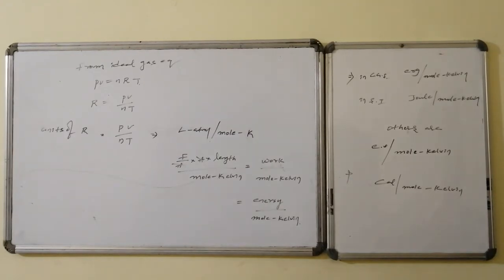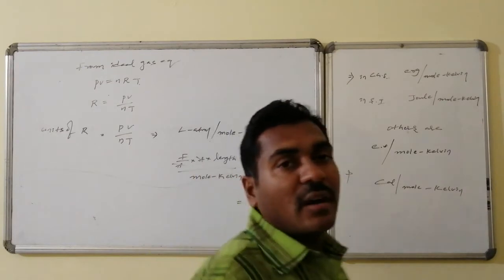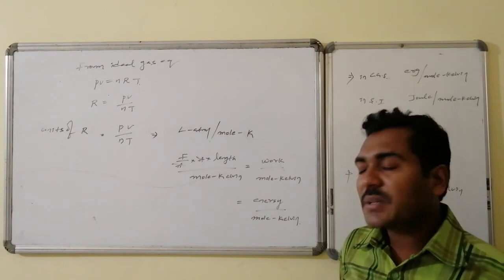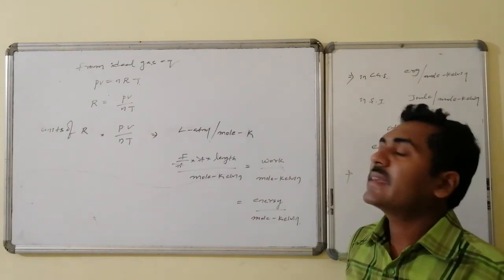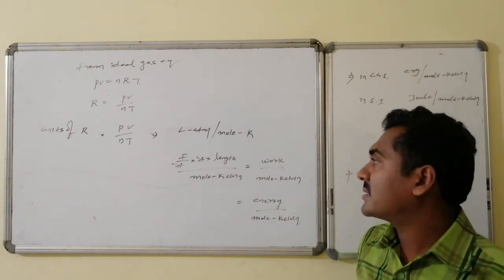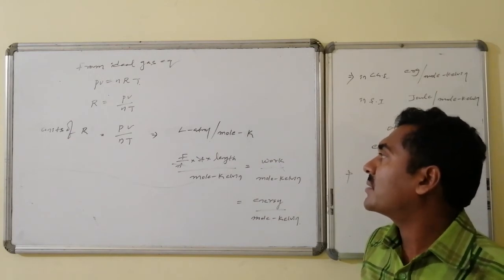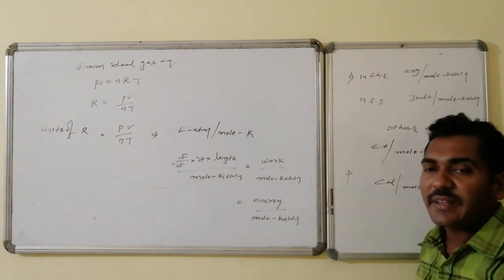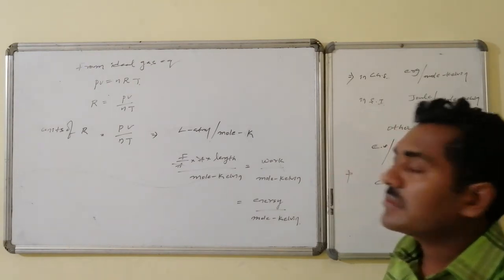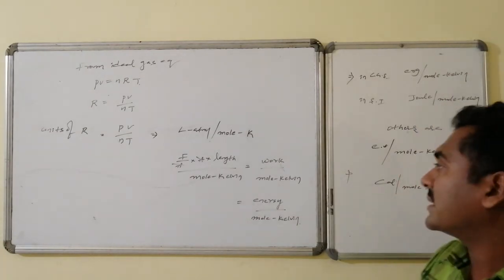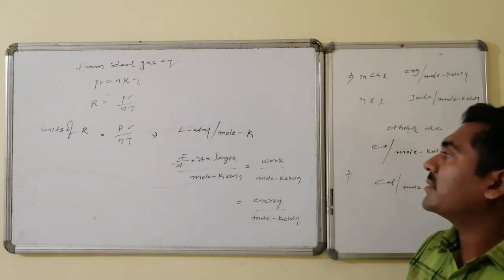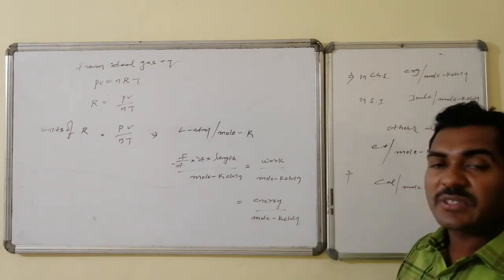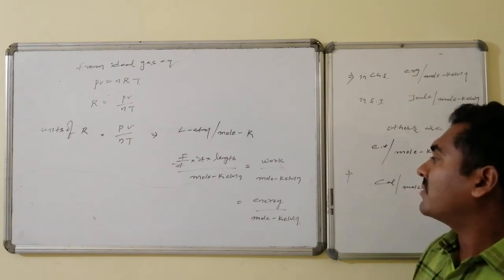From the ideal gas equation PV = nRT, R is the universal gas constant equal to PV/nT. The units of R are determined from PV/nT: pressure is force per unit area, and volume is area times one dimension of length, so area cancels, leaving force times displacement, which is work. Work is a form of energy. Therefore R has units of energy per mole per Kelvin, expressed as liter-atmosphere per mole per Kelvin.